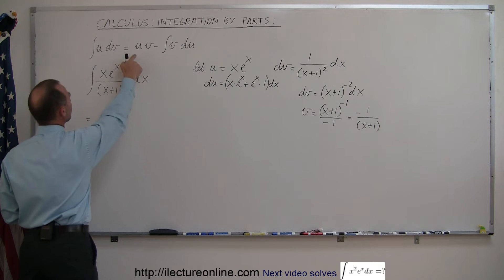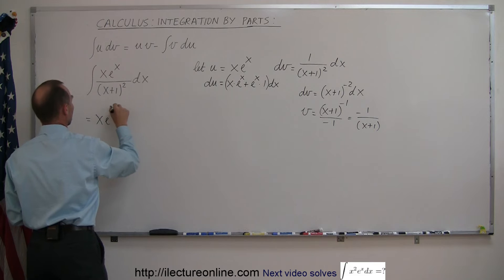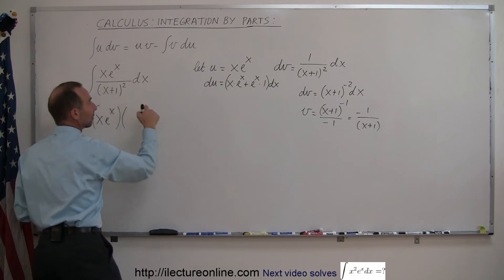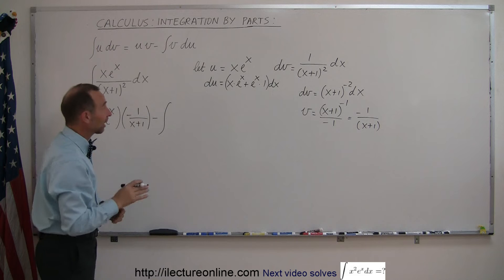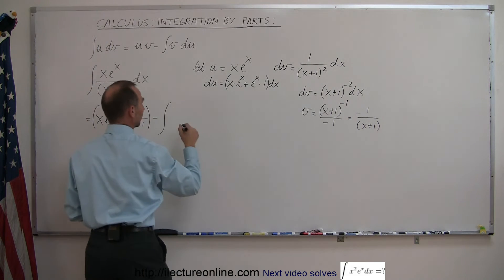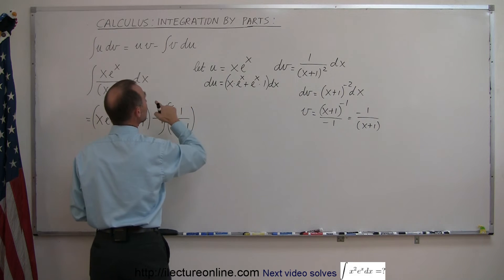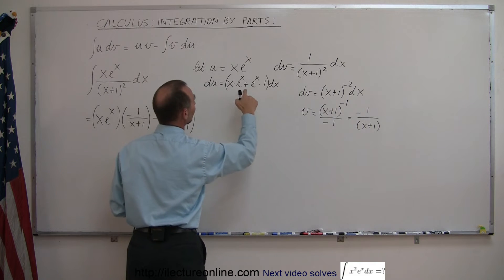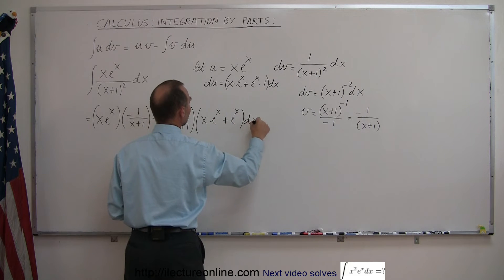Alright, so this now is equal to u times v, our u is x e to the x, and we multiply that times v and our v is minus 1 over x plus 1. Minus the integral of, and let's hope we end up with something we can actually integrate, so we need a v and our v is minus 1 over x plus 1 times du and our du is this right here, so that would be the quantity x times e to the x plus e to the x times dx.